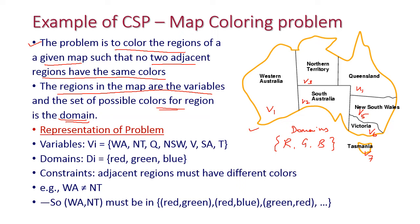We need to assign a color to every region, but the condition is that no two adjacent regions should have the same color. The variables are: Western Australia, Northern Territory, Queensland, New South Wales, Victoria, Southern Australia, and Tasmania — represented as WA, NT, Q, NSW, V, SA, and T. The domain is red, green, and blue.